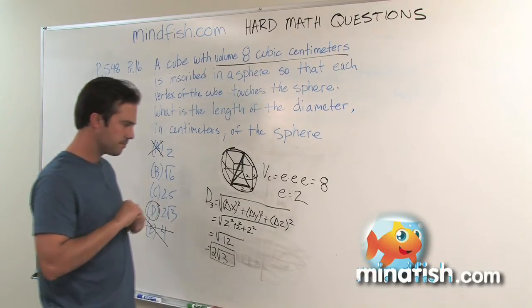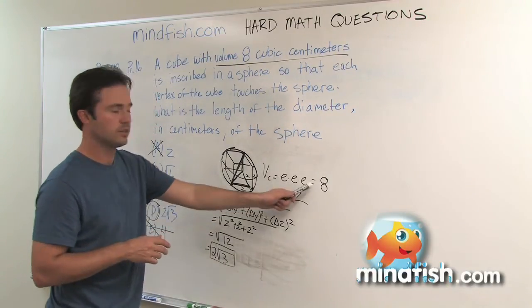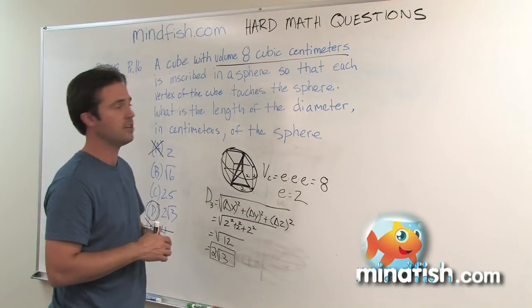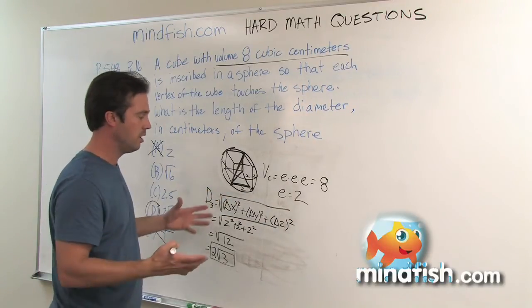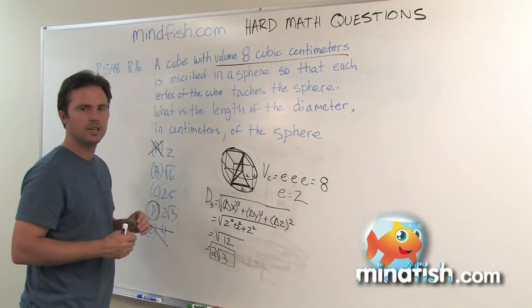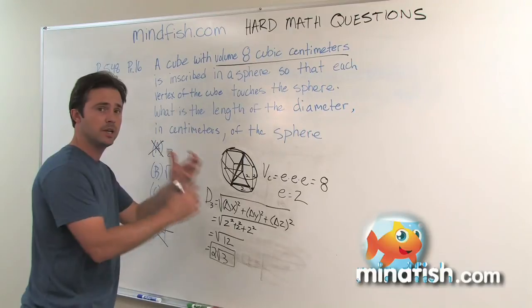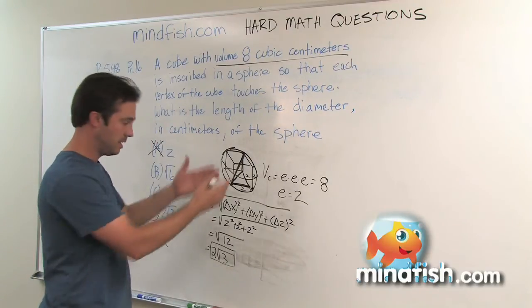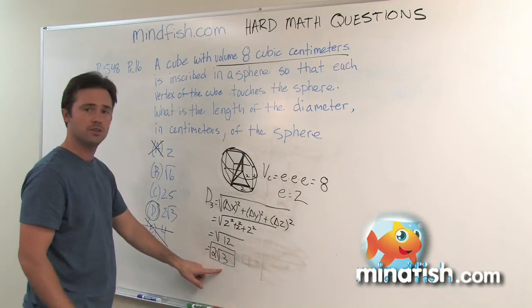Another thing to consider here is that until we wrote this equation down, we really didn't get any tangible data to use. So again, if you're on a hard question and you're not sure what to do, write an equation down, draw a picture, and your brain will have something to use, something to work on to get you to that next step and eventually to the right answer.